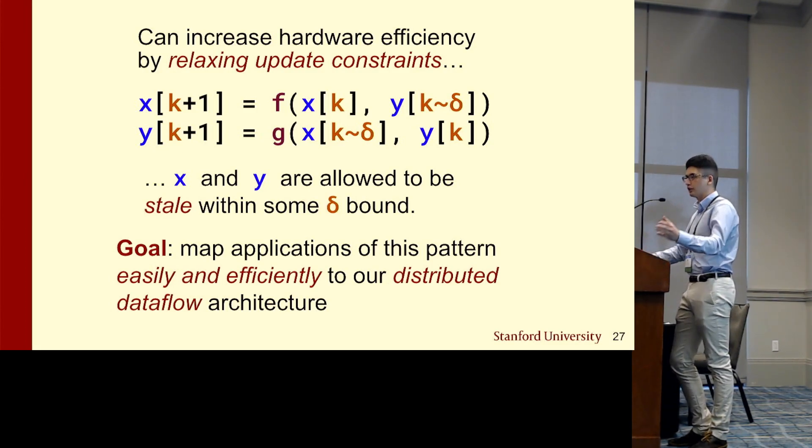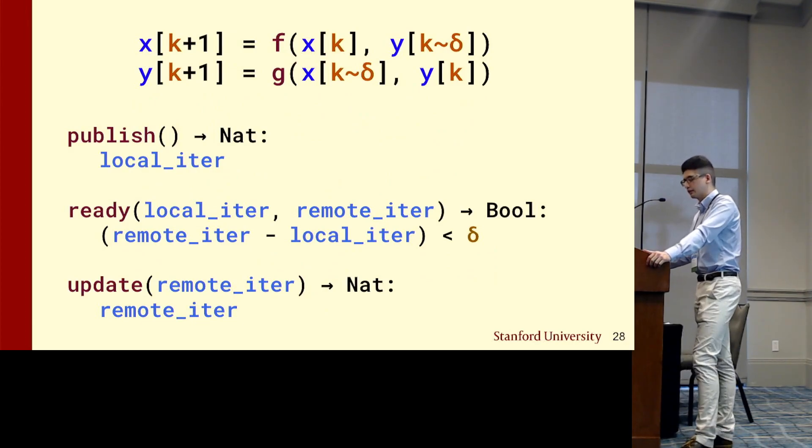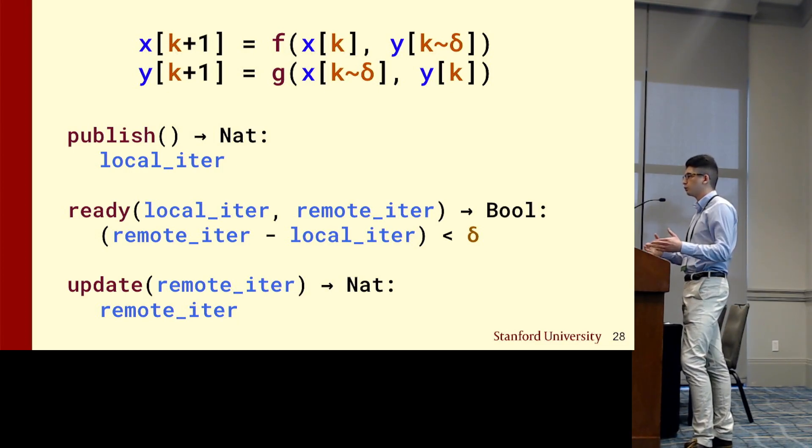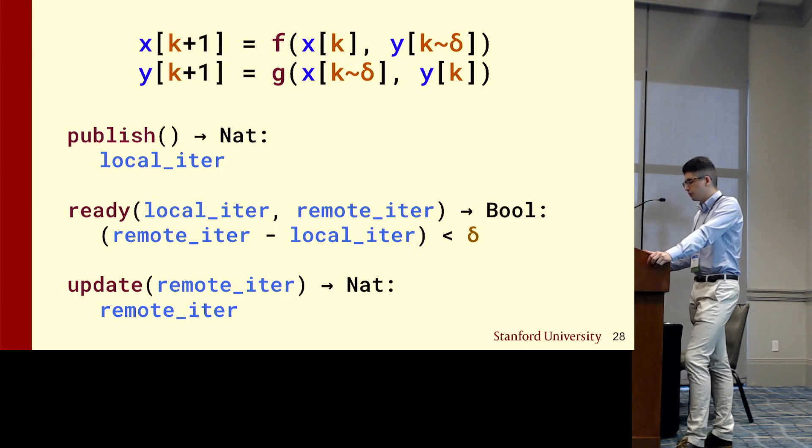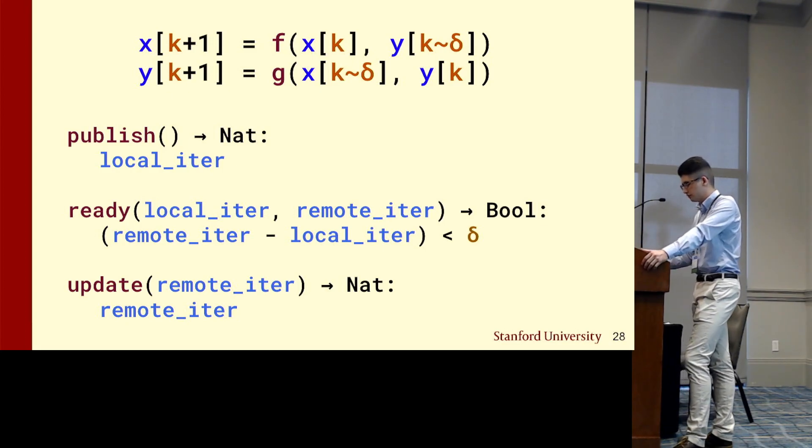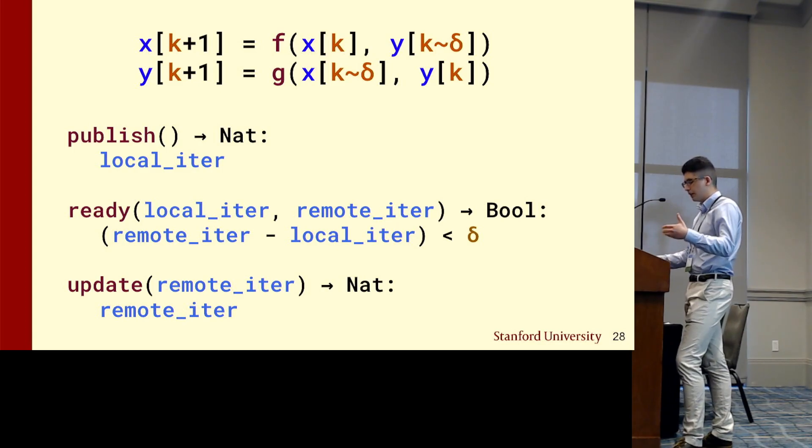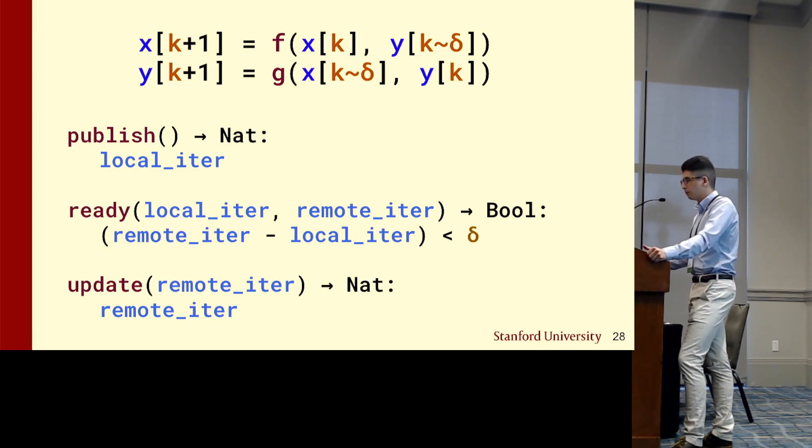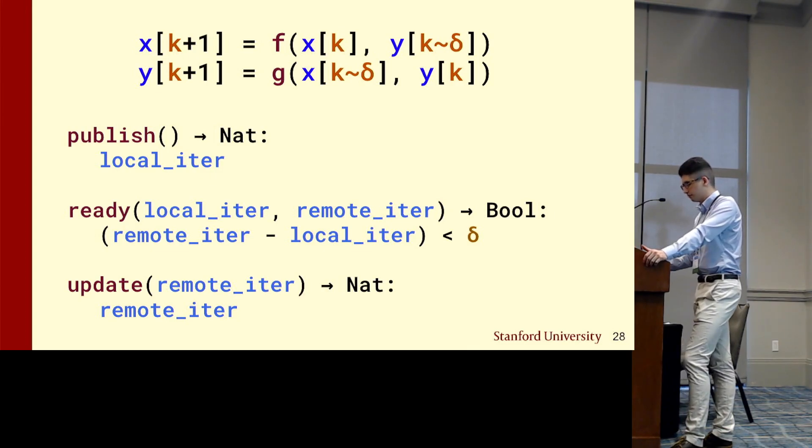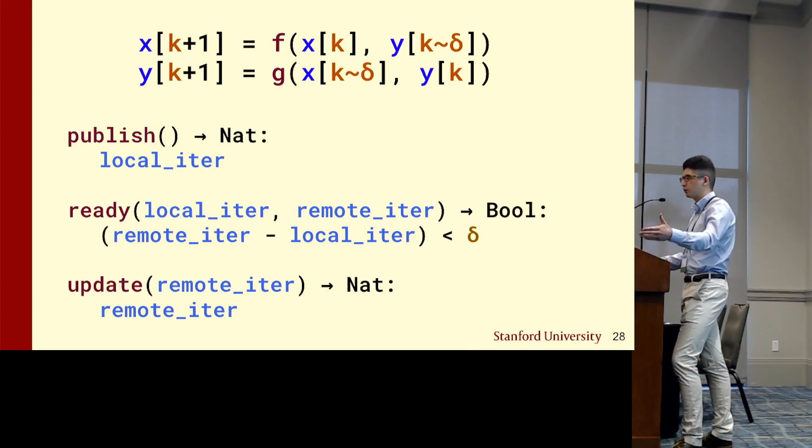We want to map applications of this pattern efficiently to our distributed data flow architecture. Here's an example of implementation using tags, where instead of communicating the entire vector on each update, you only send one integer that tells you which iteration you are. This reduces communication cost by a factor of delta, because you're only communicating the entire vector every delta iterations. This increases hardware efficiency at some acceptable cost for statistical efficiency. Tags can potentially make designing algorithms of this type easier by providing application writers a simple yet structured framework to describe applications of this pattern and have a compiler automatically map it to RDA hardware efficiently.